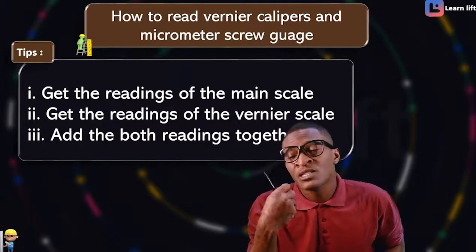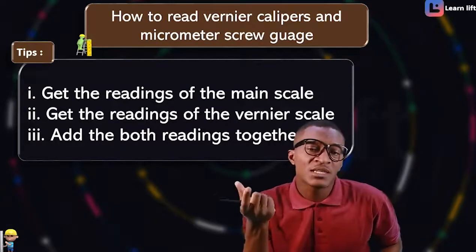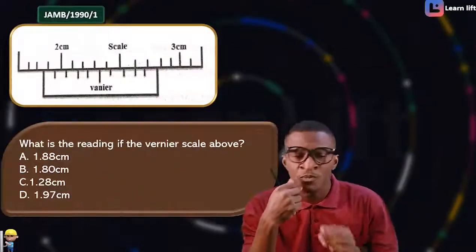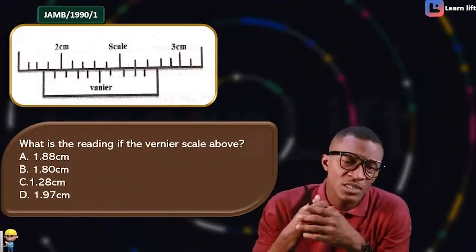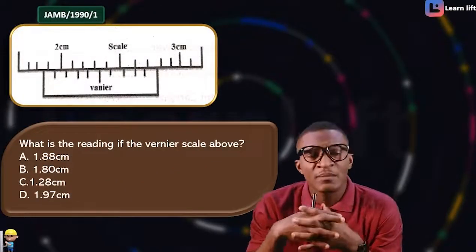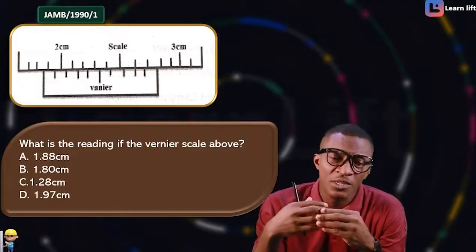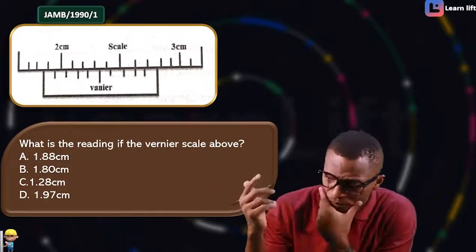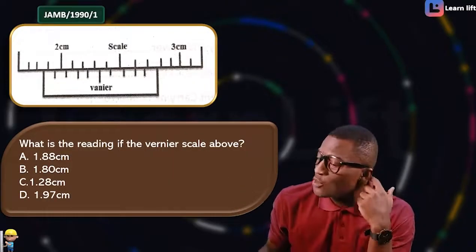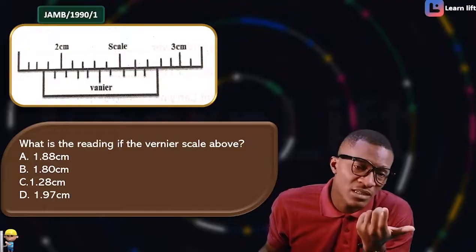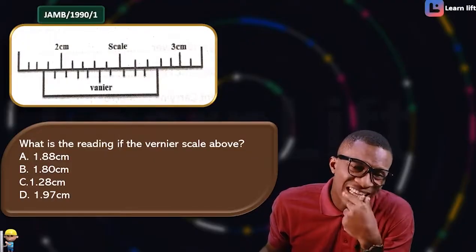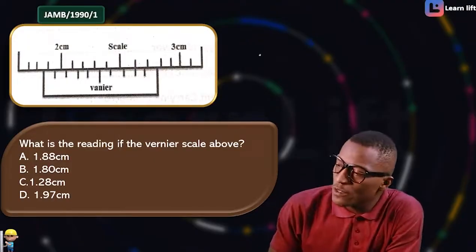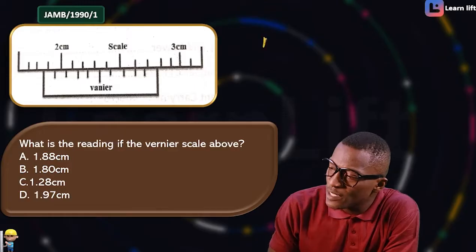Now let's go straight to examples. This is a past question — JAM 1990 Question 1: what is the reading for the vernier scale shown? First, we get the main scale reading, then the vernier scale reading.